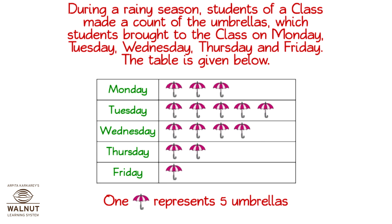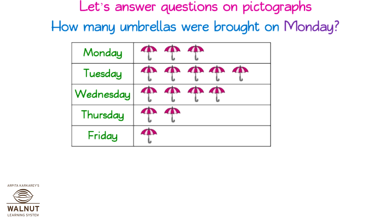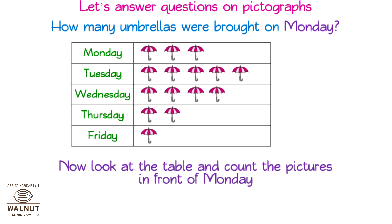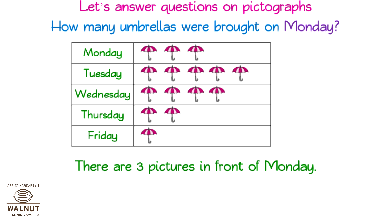During a rainy season, students of a class made a count of the umbrellas which students brought to class on Monday, Tuesday, Wednesday, Thursday, and Friday. The table is given below. How many umbrellas were brought on Monday? Look at the table and count the pictures in front of Monday. There are three pictures in front of Monday.